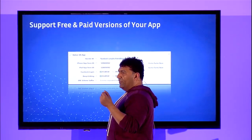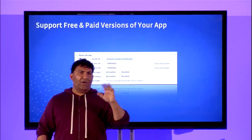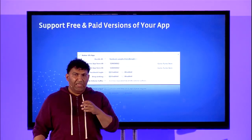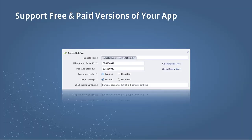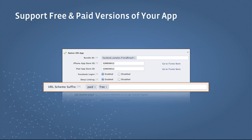On iOS you can support both free and paid versions of your app. Inside your Facebook app configuration at developers.facebook.com, you can specify that your app is a native iOS app. There is a field called the URL scheme suffix, and inside here you can specify different versions of your app — for example, a free version and a paid version. This enables you to use the same app ID whether you have a free or paid version.